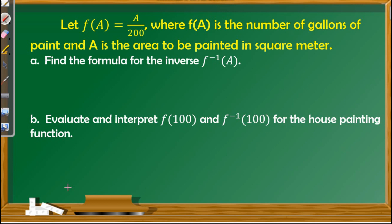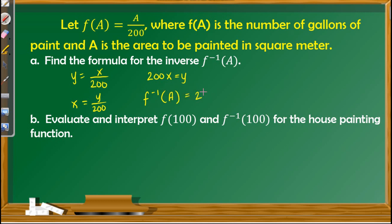Second problem: let f(a) = a/200, where f(a) is the number of gallons of paint and a is the area to be painted in square meters. Find the formula for the inverse. To find the inverse, change f(a) to y and a to x, then interchange x and y: x = y/200. Multiply both sides by 200, giving 200x = y. Therefore, f inverse of a = 200a.